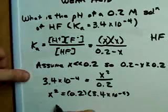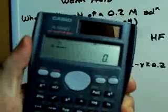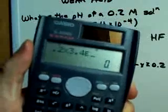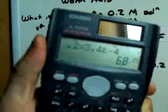And, if I plug that into my calculator, what do I get? I get 0.2 times 3.4 to the power of minus 4. I get that.